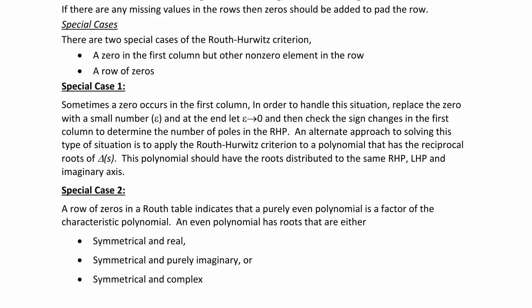Now to the special cases. If there is a zero in the first column but other non-zero elements in the row, replace the zero with a small number epsilon. At the end, let epsilon approach zero and check sign changes in the first column to determine the number of poles in the right-half plane. An alternate approach is to apply the Routh-Hurwitz criterion to a polynomial with the reciprocal roots of delta of S, which has roots distributed to the same right-half plane, left-half plane, and imaginary axis.